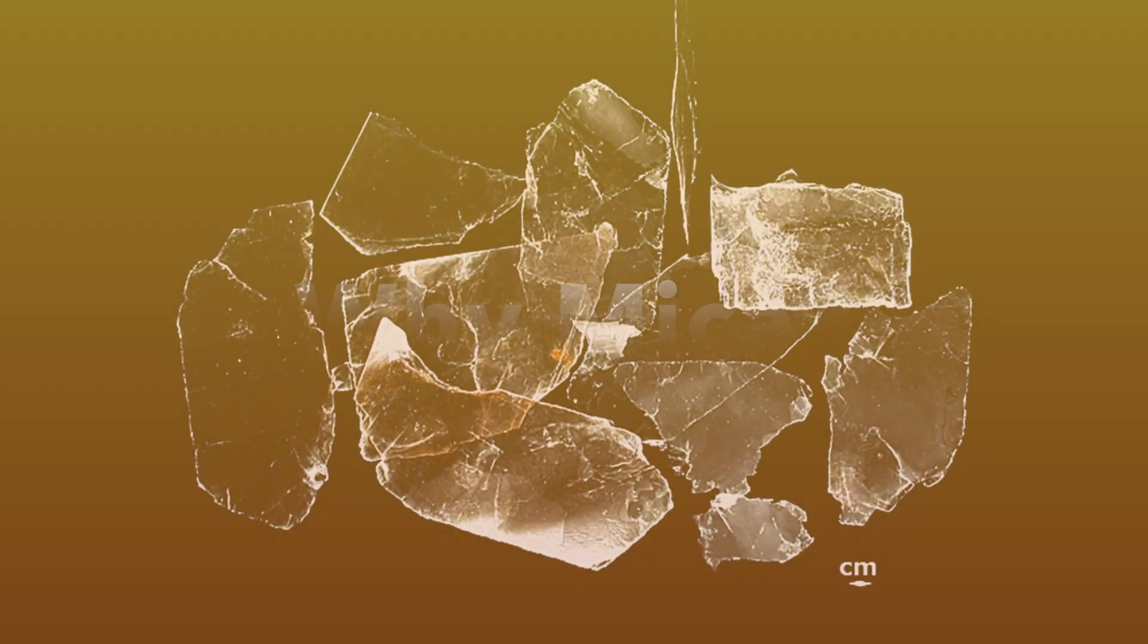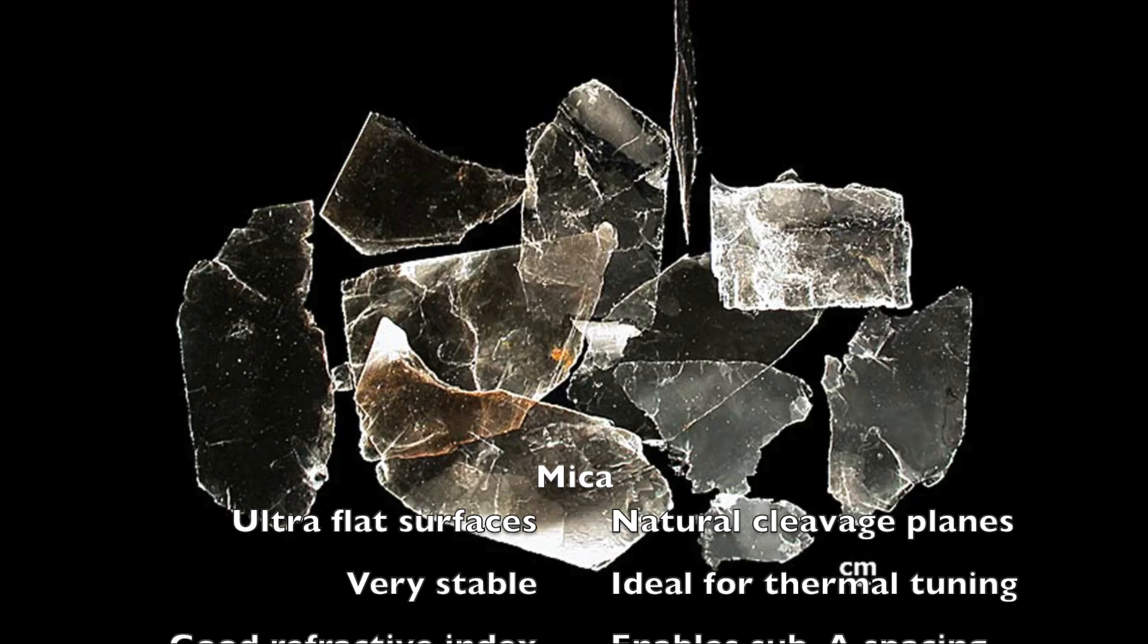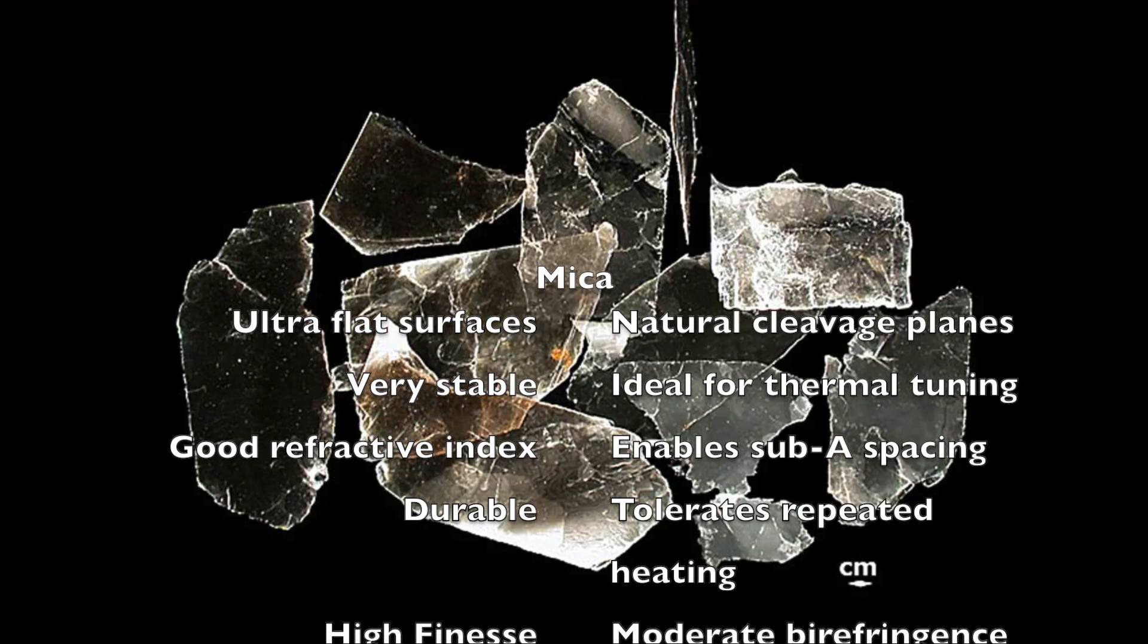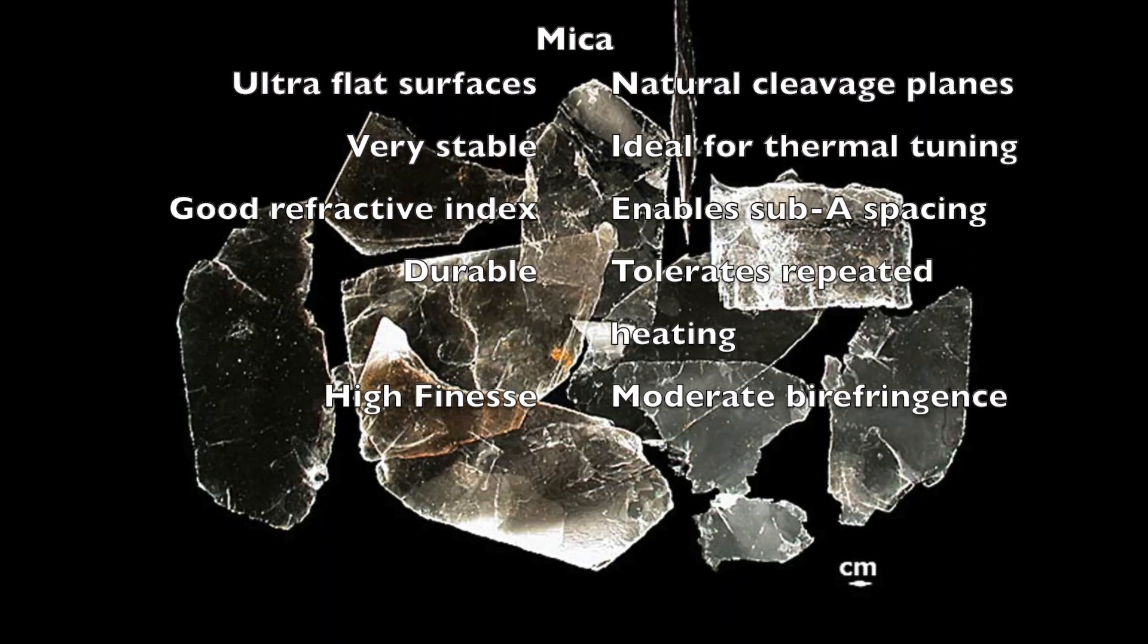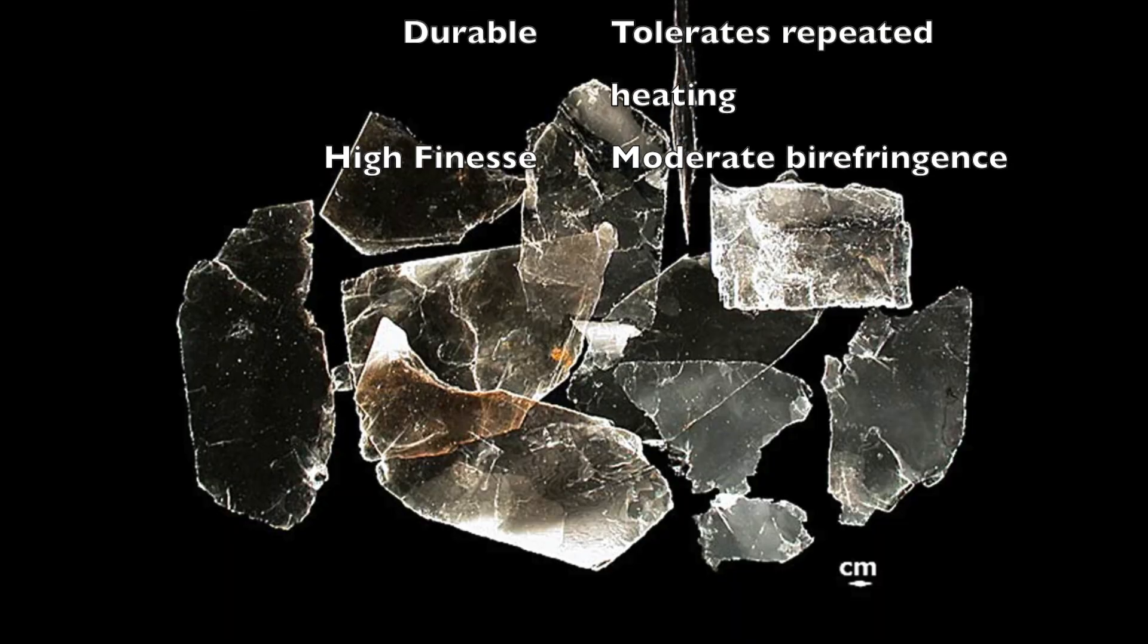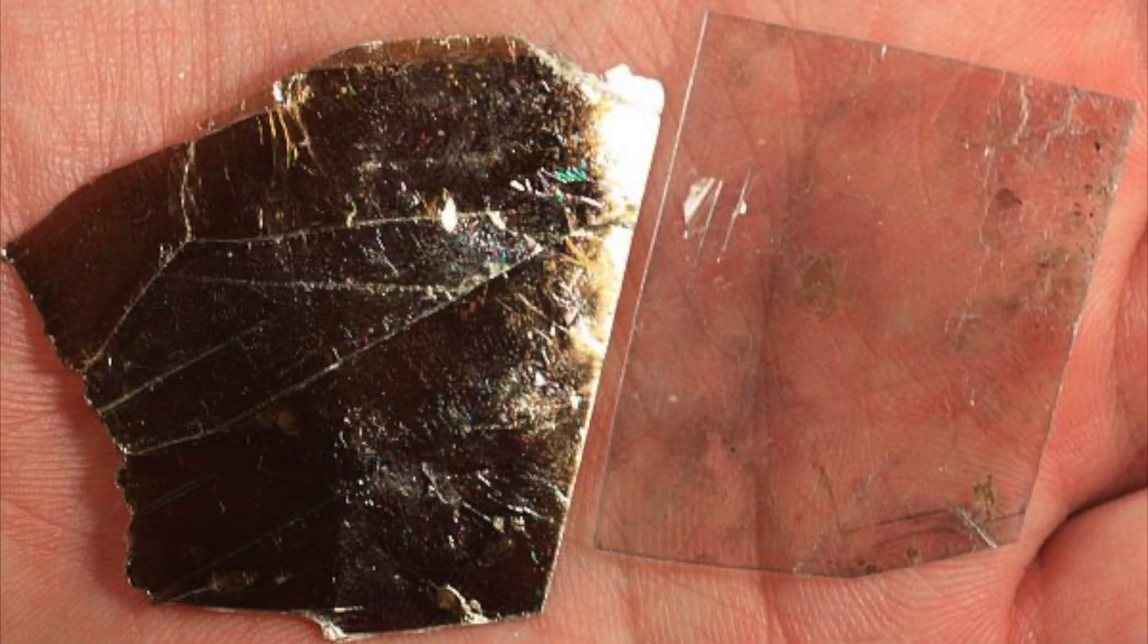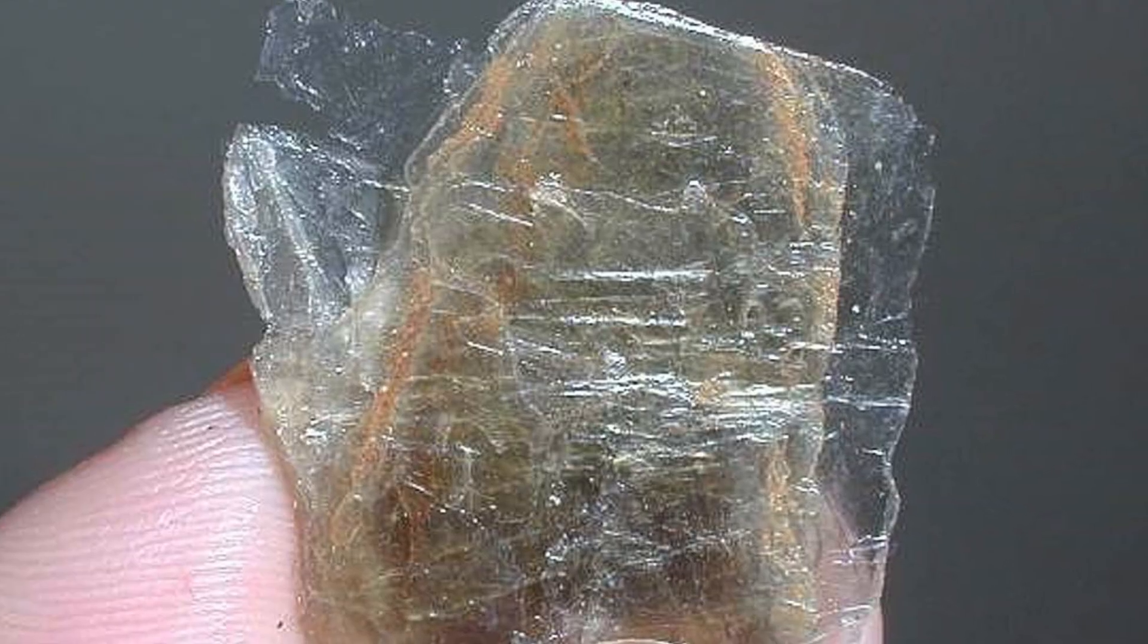Solid hydrogen alpha etalons are made with mica. Why mica? They use mica because mica uniquely provides ultra-flat surfaces, which gives you natural cleavage planes. It's very stable, which is ideal for thermal tuning. It has correct refractive index, which enables sub-angstrom spacing. It's durable, tolerating repeated heating. And it has high finesse, which gives you moderate birefringence. No other material checks all of these boxes. But mica varies in translucency, flatness, uniformity, and inclusions. And mica is difficult to cleave consistently.